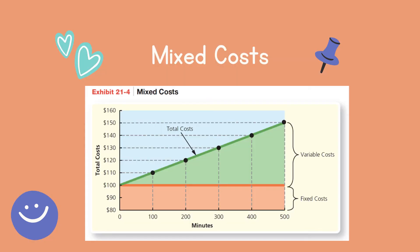On the mixed cost graph, the total fixed cost is $100 — whether you use the phone for zero minutes or 500 minutes, you still pay $100. The variable cost starts from zero and goes up. The total cost, which is fixed plus variable together, starts from $100 and goes up — because at zero minutes it's $100, and at 100 minutes it's $110.